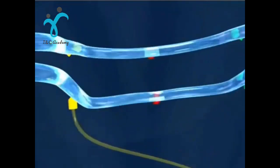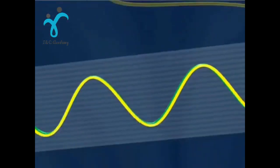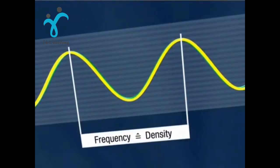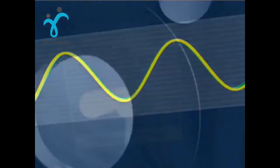Should the density of the media need to be determined, it is simply computed by evaluation of the oscillation frequency of the measuring tubes.